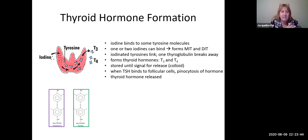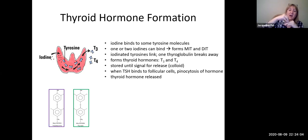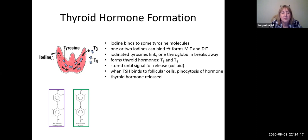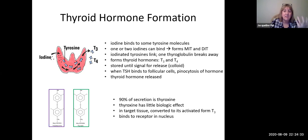T3 and T4 are made in the colloid and they wait there for the signal to be released. The signal is TSH — thyroid-stimulating hormone — coming from the adenohypophysis. When TSH makes its way to the thyroid gland and binds to the follicular cell, T3 and T4 get released from the thyroid gland in a little vesicle. About 90% of what is secreted from the thyroid gland is thyroxine, or T4.